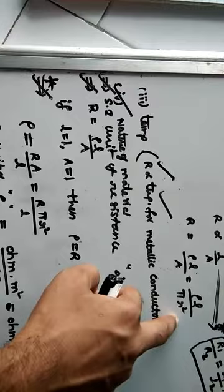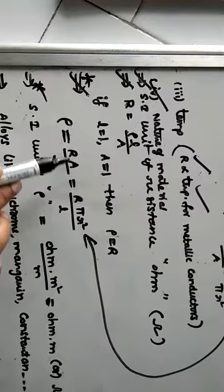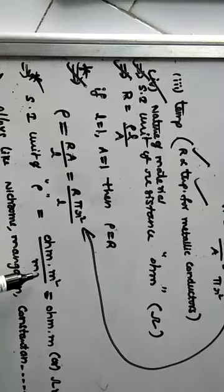From R equal to rho L by A, we get rho equal to R times A by L, which is R times pi R squared by L. The SI unit of rho: R has SI unit ohm, area has SI unit meter squared, length has SI unit meter. Meter and meter cancel, giving ohm meter. That is the SI unit of resistivity.